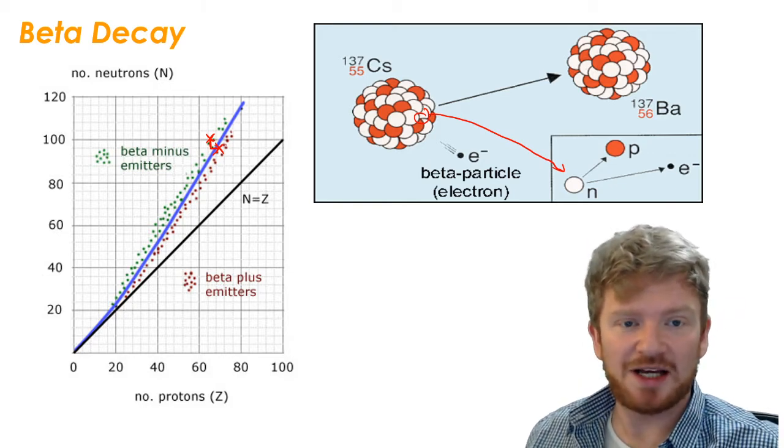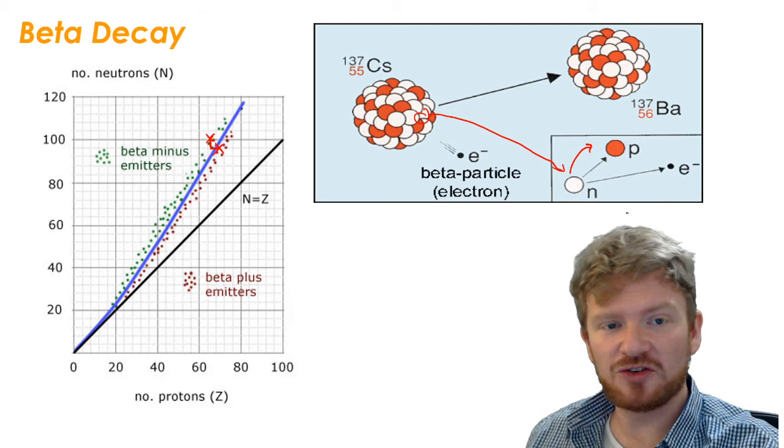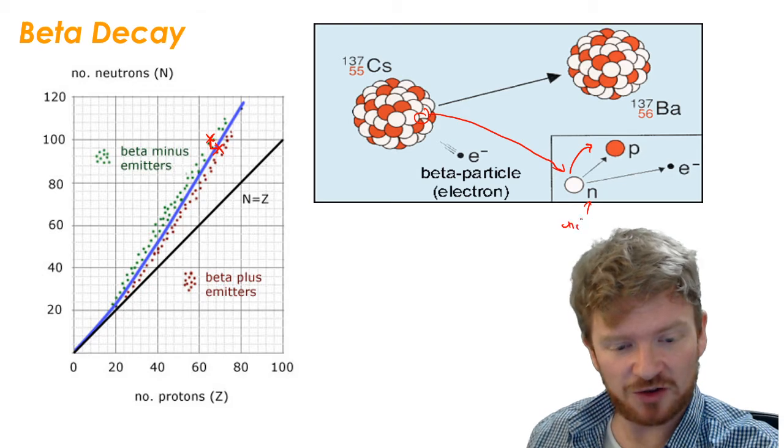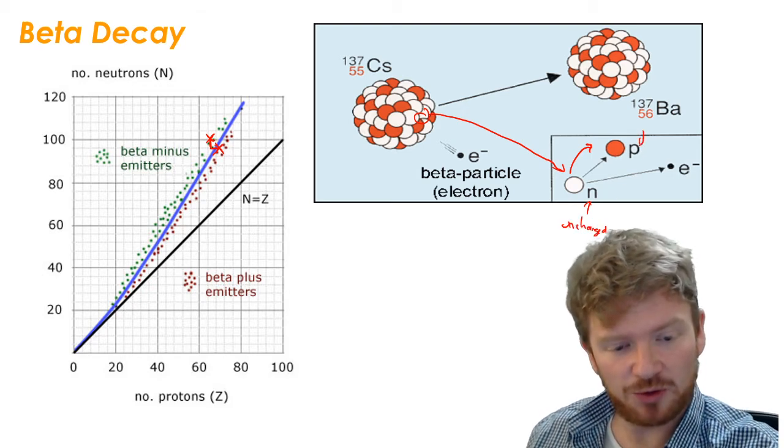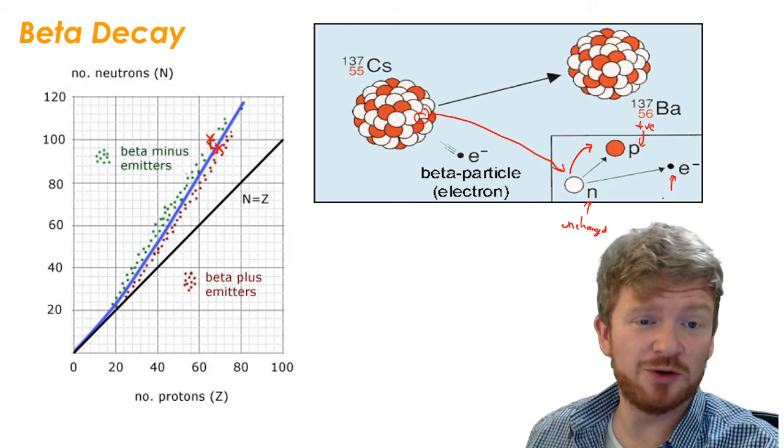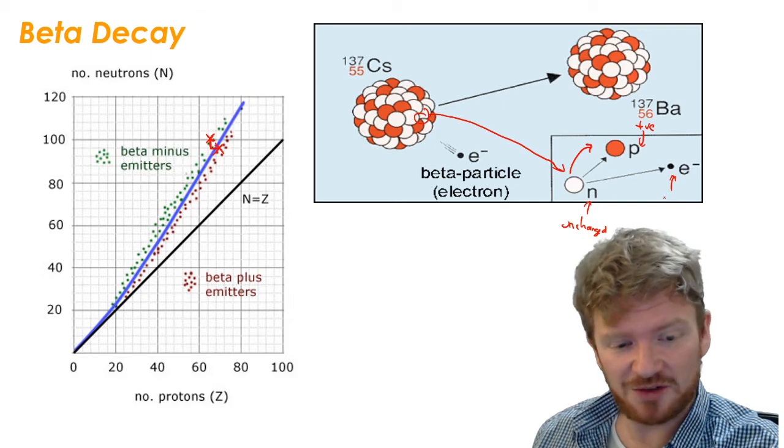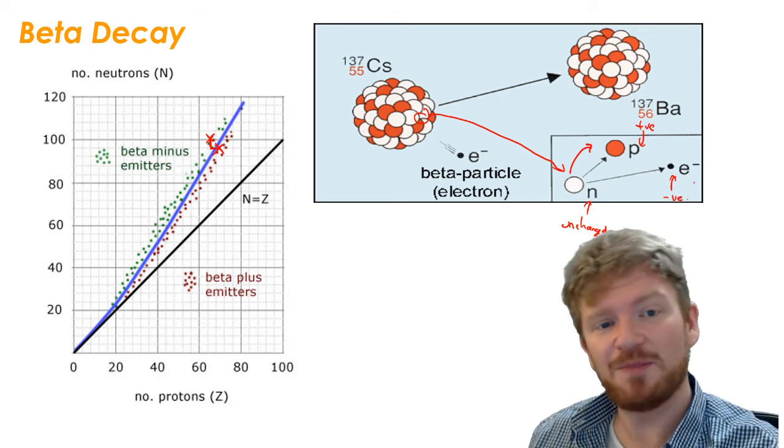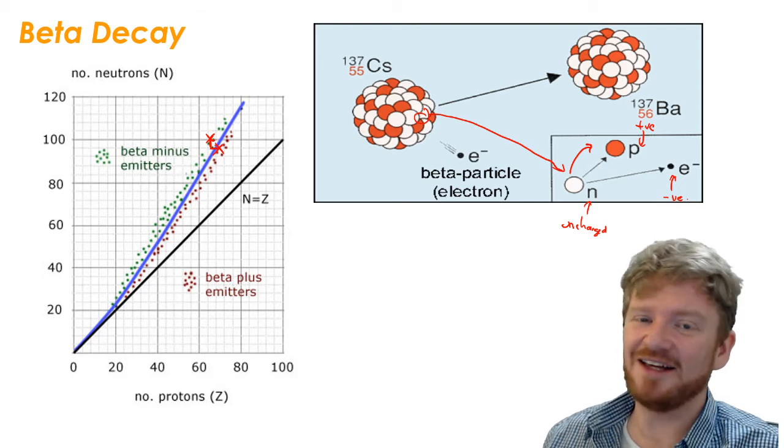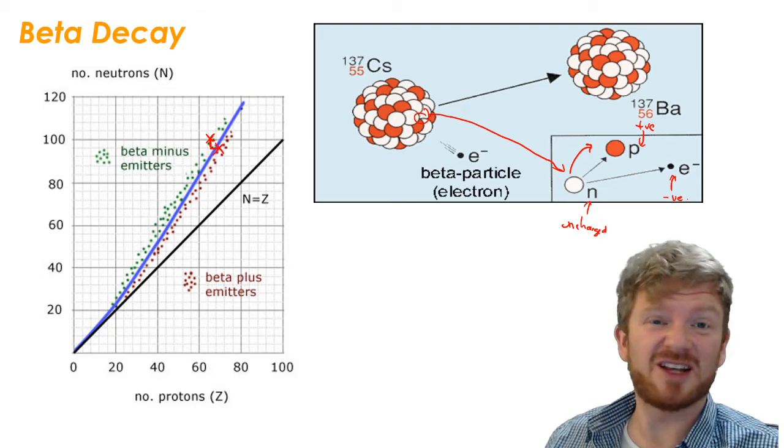So in beta decay, we have a neutron becoming a proton. And in order to conserve charge, it has to emit an electron. If you think about it, a neutron is uncharged or neutral, and a proton is positive. So in order to, for weird rules of the universe, one of the weird rules of the universe is that we can't get rid of charge. So because we can't get rid of charge, we're going to have to get some negative charge created as well to balance out the positive charge from that proton being created. All I can do is promise you that if you do A-level, we kind of explain it a little bit more, but it's still weird. And it's just one of those strange things. You just kind of have to accept that that's what happens.